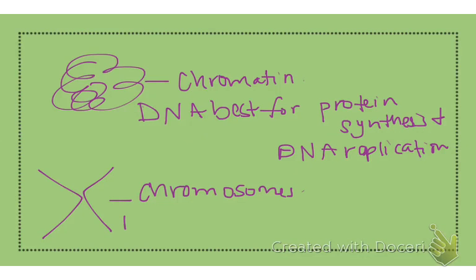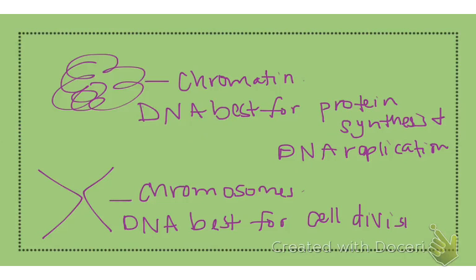Chromosomes are the tightly coiled DNA — best for cell division. So how does DNA control protein synthesis in eukaryotes? DNA that is wound up like chromosomes is not able to do transcription. The DNA that is unwound — chromatin, like in interphase — is able to be transcribed and make RNA, which then makes the protein.